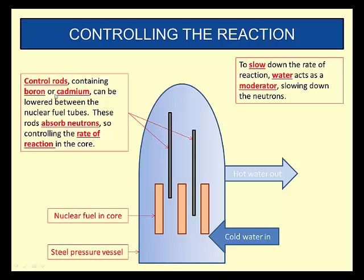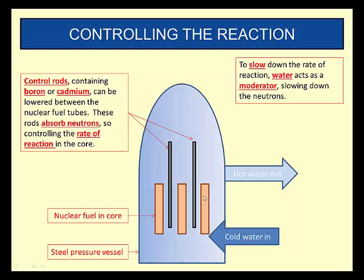To control the rate we need control rods. Control rods containing boron or cadmium can be lowered between the nuclear fuel tubes. As neutrons are given off, these boron or cadmium rods absorb the neutrons. If they absorb the neutrons there will be fewer reactions, so you can control the rate of reaction. To have a faster rate of reaction you can take the rods completely out, so there's nothing stopping neutrons from causing the chain of reactions. If you want to slow it down, you lower the rods between the uranium fuel tubes and that absorbs lots of neutrons, slowing it right down.